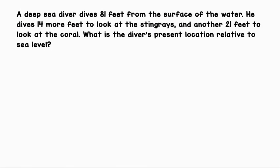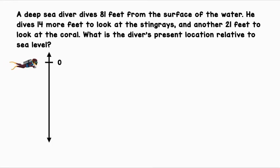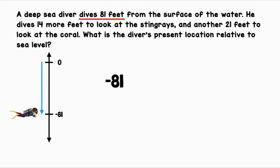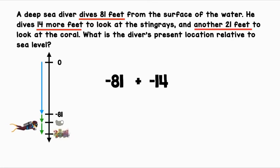A deep sea diver dives 81 feet from the surface of the water. He dives 14 more feet to look at the stingrays and another 21 feet to look at the coral. What is the diver's present location relative to sea level? Let's represent this situation on a vertical number line. The diver starts at zero, dives 81 feet represented as negative 81, then dives 14 more feet for the stingrays so we add negative 14, and lastly he dives another 21 feet to look at the coral so we add negative 21. The sum will give us the diver's present location.